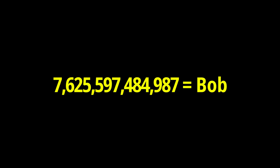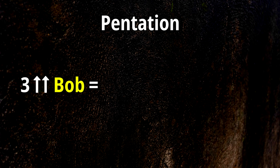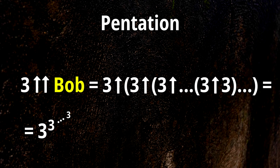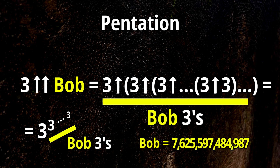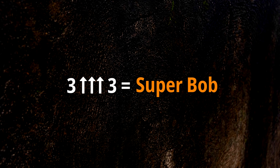Let's call this number bob. So 3 ↑↑ bob is nothing else than 3 to the 3rd power, and this to the 3rd power, and this to the 3rd power, and the number of those 3rd powers here is bob. If you want to calculate the exact value of this monstrosity, also known as super bob, go ahead. I won't do it.